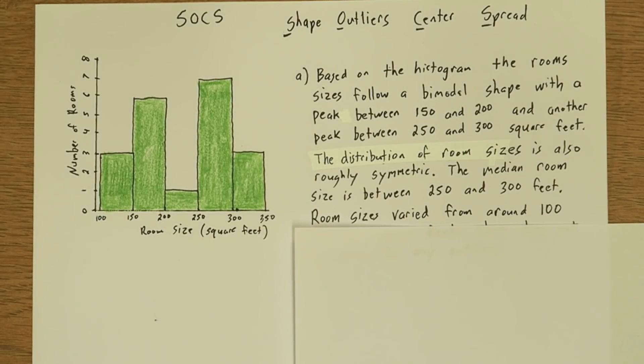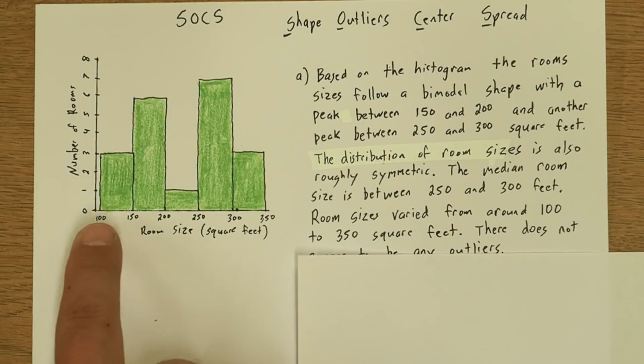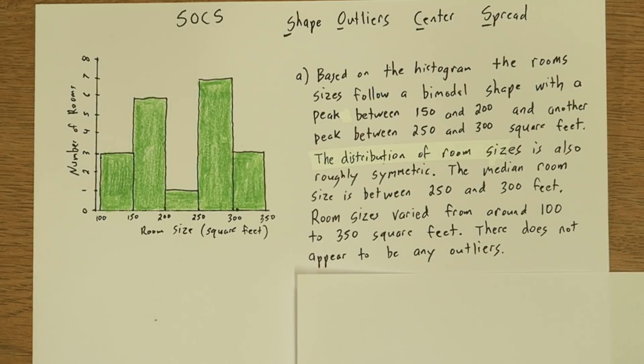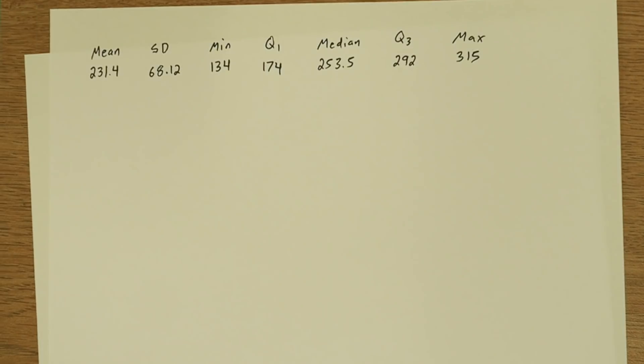Next we're going to talk about the spread. And all we can really say is that the room size varied from about 100 to 350 square feet. And then based on only this histogram, we can say there doesn't appear to be any outliers.